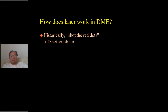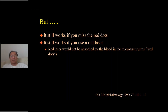I want to talk briefly about why laser works in DME and how we differentiate the different types. In the very beginning, people thought we shoot at the red dot to directly close the microaneurysm — that was how it was thought to work. However, we realized that even when we miss the red dot it still works, and when using a red laser that passes the red dot, it still works.